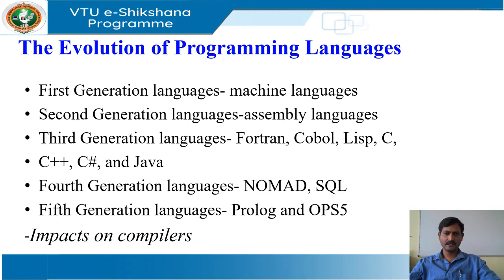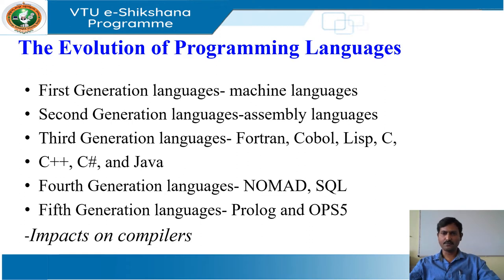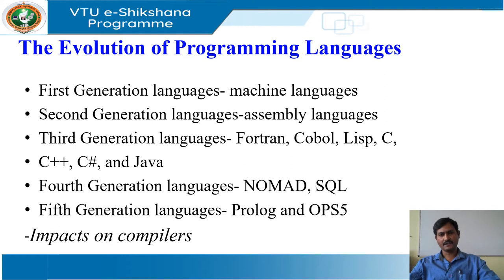Later, macro instructions were added to assembly languages so that programmers could define parameterized shorthands for frequently used sequences of machine instructions. A major step towards higher level languages was made in the later half of the 1950s with the development of Fortran for scientific computation, COBOL for business data processing and Lisp for symbolic computation. These languages were so successful that they are still in use today.